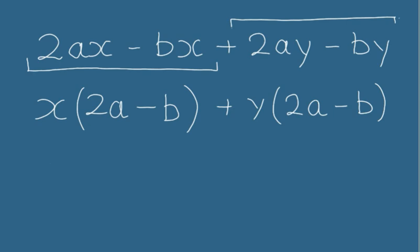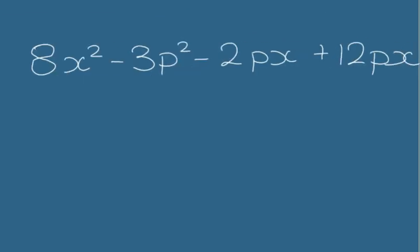So the last step is to group everything together. So the x and the y can be put into its own bracket, and then we have a common bracket of 2a minus b. This process is called grouping.